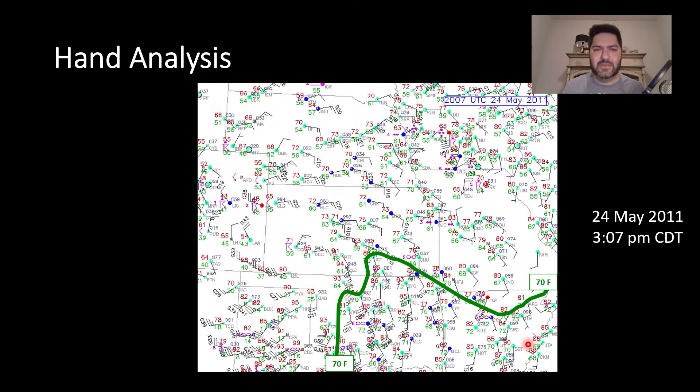So this is known as isoplething, basically taking any quantity, temperature, dew point, whatever, wind speed, and getting a good sense of it by plotting it. And here in this case, I've plotted the dry line.